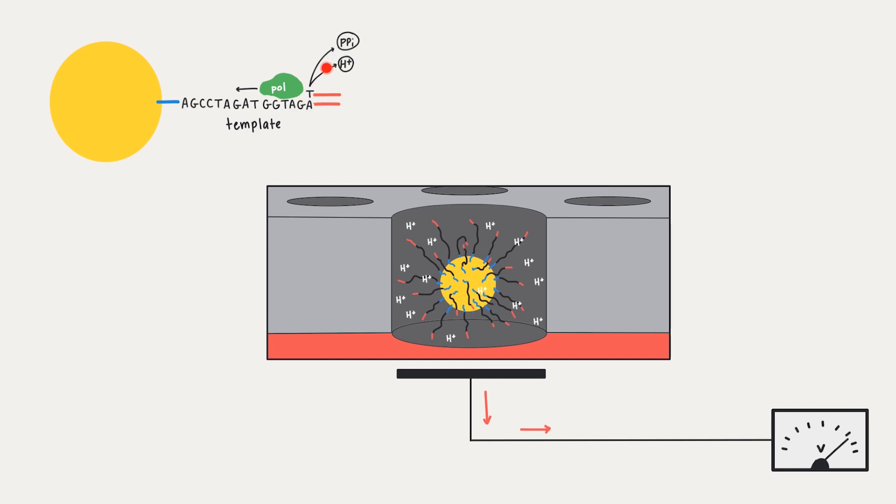If the nucleotide does complement the next base on the template, it will be incorporated to the growing complementary strand, and a hydrogen ion will be released. This will change the pH of the solution, which triggers the ISFET ion sensor to send a series of electrical pulses to the computer that will be used later on to translate into a DNA sequence.